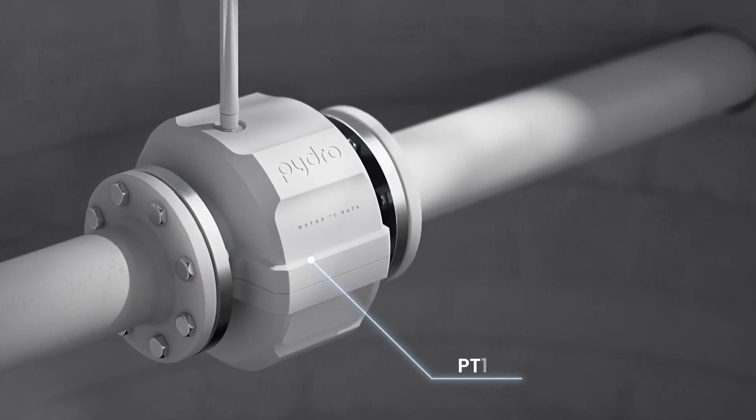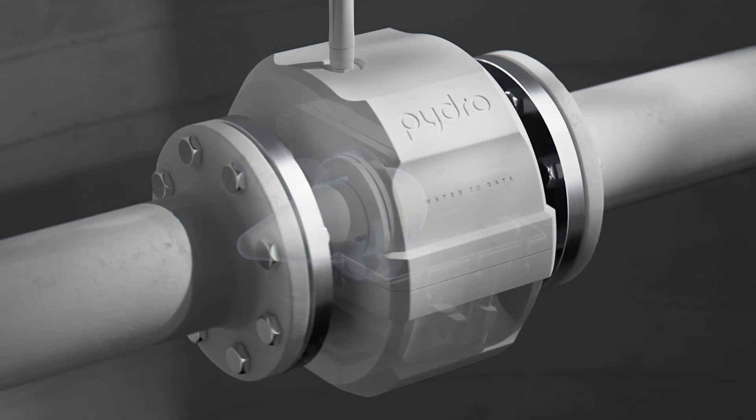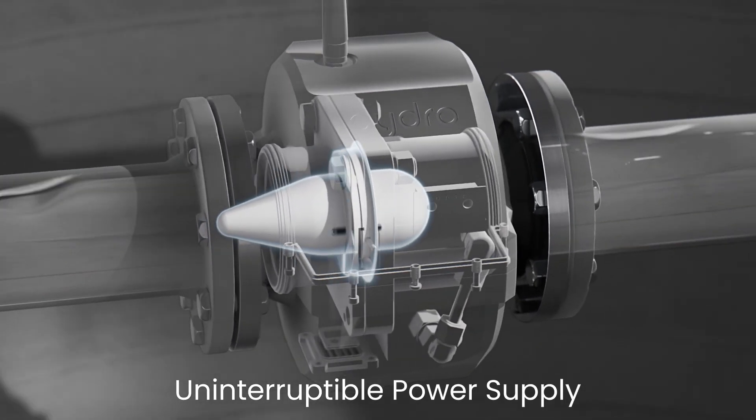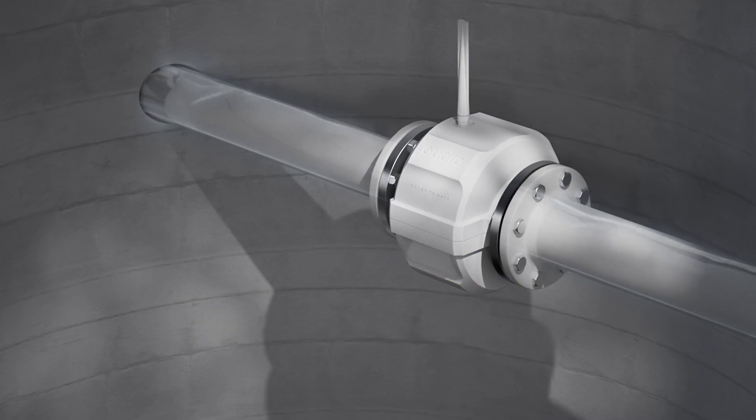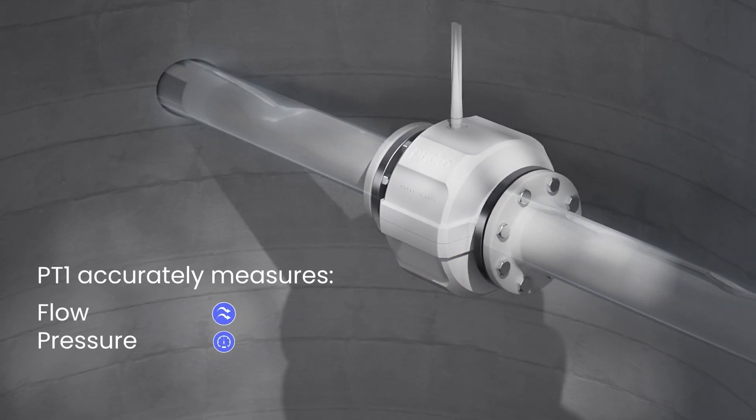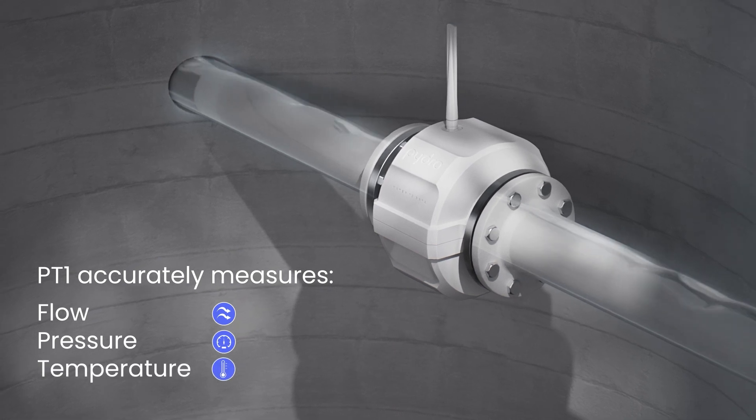Introducing Pydros PT1, the world's first flow meter with a built-in hydropower unit, eliminating the need for external power. Designed for large-scale deployment, it accurately measures flow, pressure, and temperature in real time throughout the network.